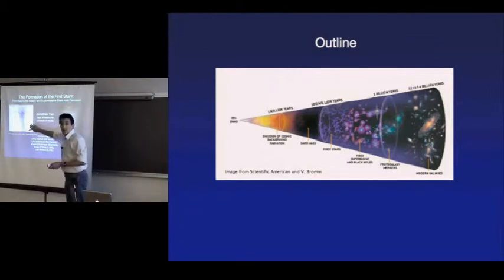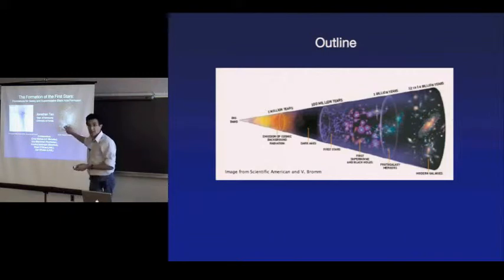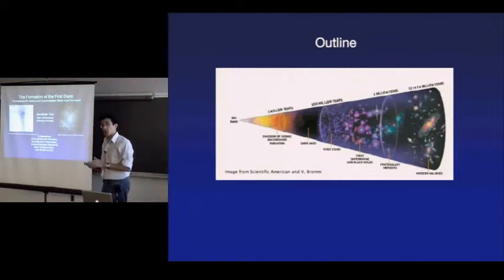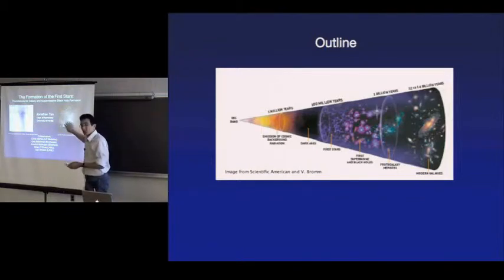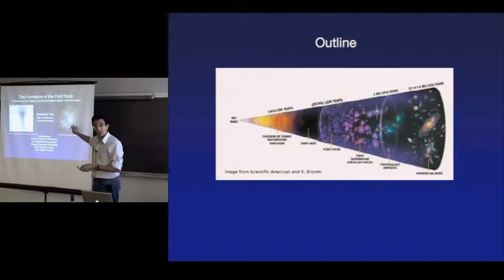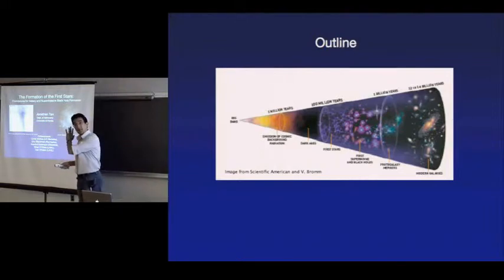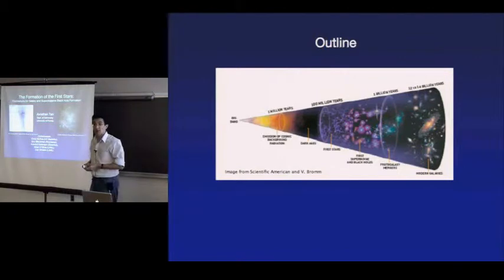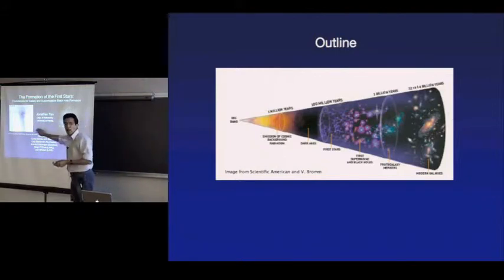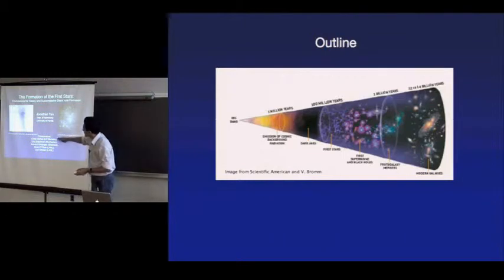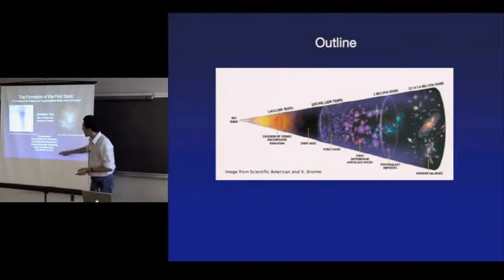I'm going to spend most of my time talking about what we think happens next — what is this thing going to do? Tomorrow I'm giving a lecture on local star formation. My collaborators on this project are Chris McKee at UC Berkeley, Eric Blackman at Rochester, Aravind Natarajan at Bielefeld, and Brian O'Shea and Dan Whelan from Los Alamos.